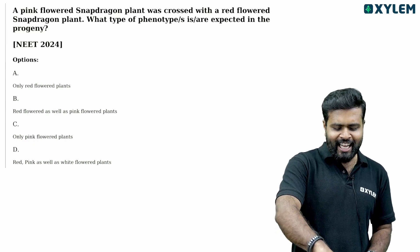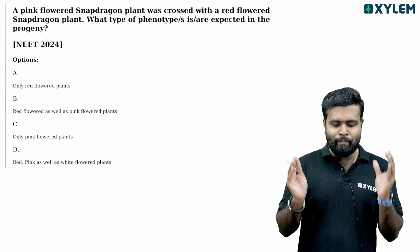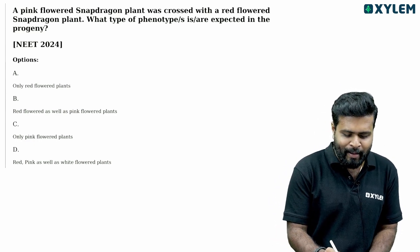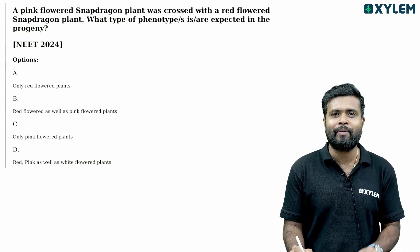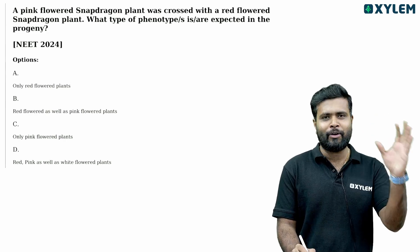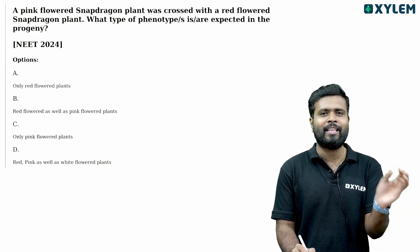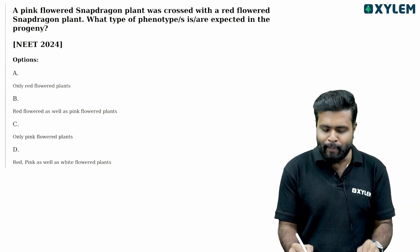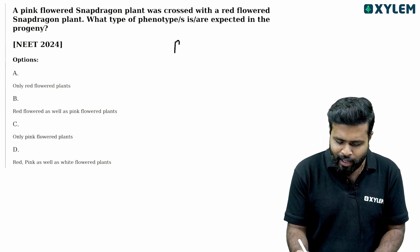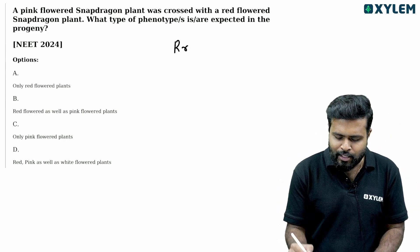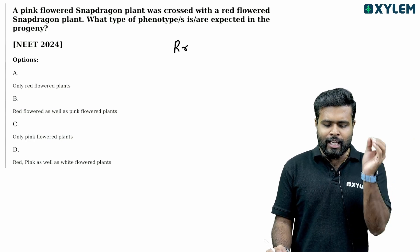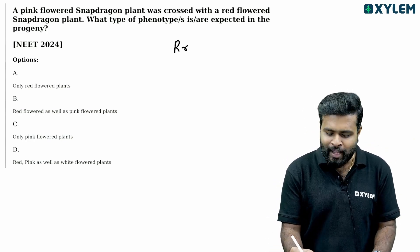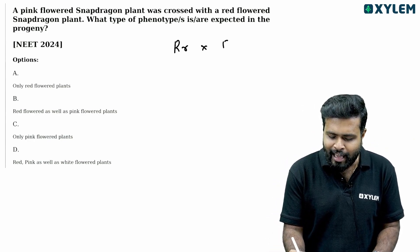If you look at this, it is a pink flowered snapdragon. It has a phenotype with genotype R and small r. The cross is with a red flowered snapdragon.